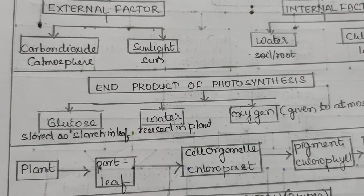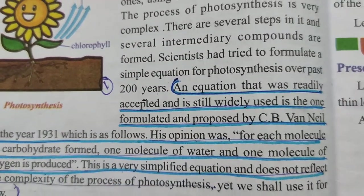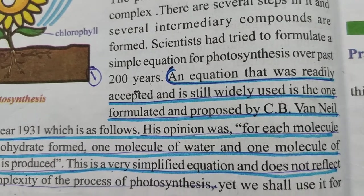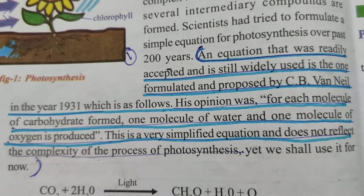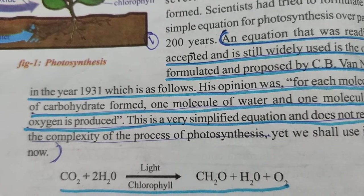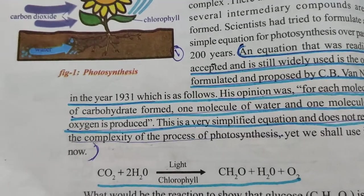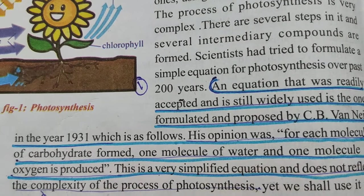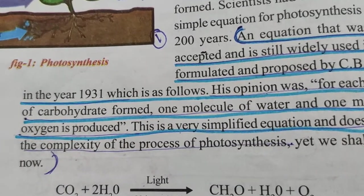Before going to the end products, let us see the equation of photosynthesis. An equation was formulated and proposed by C.B. Van Niel in the year 1931. His opinion was: for each molecule of carbohydrate formed, one molecule of water and one molecule of oxygen is produced. This is a very simplified equation and does not reflect the complexity of the process. They may ask you who formulated this equation — it was C.B. Van Niel in 1931.